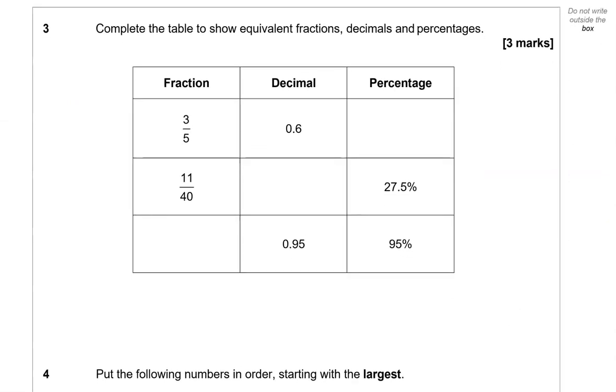Complete the table to show equivalent fractions, decimals and percentages. So we've got 3/5 as a decimal, that's 0.6 and it's given to us. As a percentage, this is going to be 60%. I'll rewrite 0.6 here, which is the same as 0.60. So that is just like 60 pence in a pound.